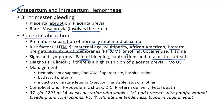Diagnosis of placental abruption is clinical. If there is high suspicion of placenta previa, do ultrasound to rule it out. Management: hemodynamic support; give Rhogam (anti-D immunoglobulin) if Rh-negative mother; hospitalization and bed rest for preterm fetus; induction for mature fetuses or C-section if fetus or mother is unstable. Complications: hypovolemic shock, disseminated intravascular coagulation, preterm delivery, and fetal death.